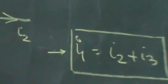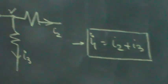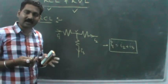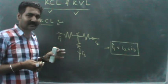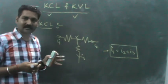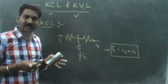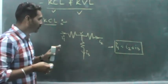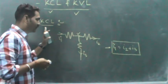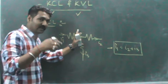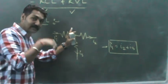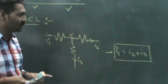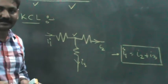This law is based on the law of conservation of charge. Whatever charge flows in the circuit is not changed — whatever charge flows from one point to another will be distributed between the branches. This is the law of conservation of charge.